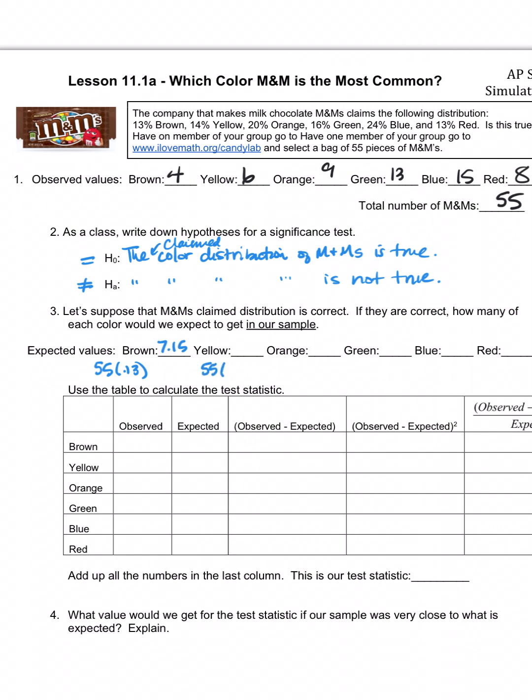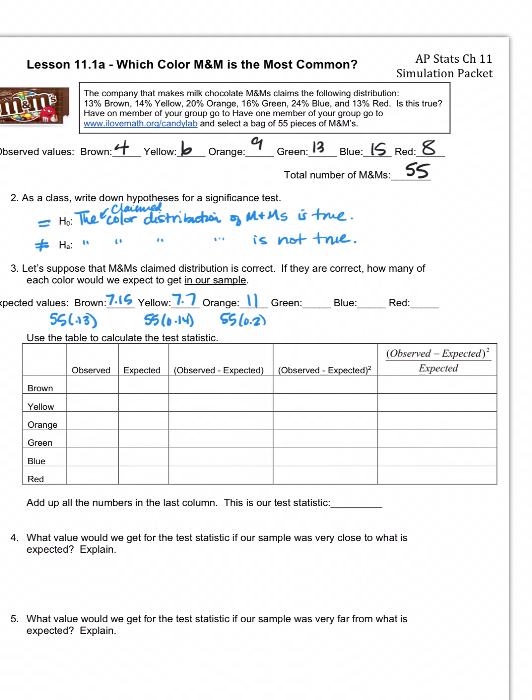Yellow, I would have done 55 times 0.14. This came out to 7.7. Orange is 55 times 0.2, which gives me 11. Do you see the pattern here? How we're finding these values? Green, 8.8. Blue, oh wait, blue is 0.24. I messed that up. Green was 16%. Blue would then be 13.2. And then red would be 13%, which is back to 7.15.